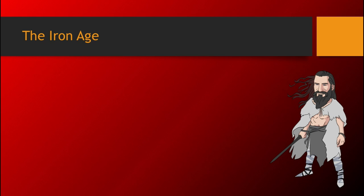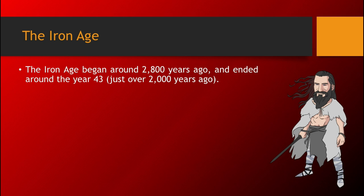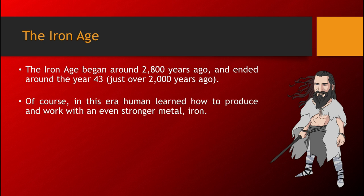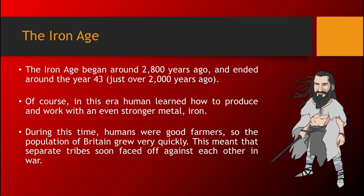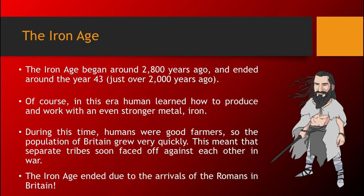The next age is called the Iron Age. The Iron Age began around 2,800 years ago and ended around the year 43, just over 2,000 years ago. In this era, humans learned how to produce and work with an even stronger metal, iron, changing their lives massively once again. During this time, humans were good farmers, so the population of Britain grew very quickly. This meant that separate tribes soon faced off against each other in war, in competition for land and resources. The end of the Iron Age came around when the Romans arrived in Britain.